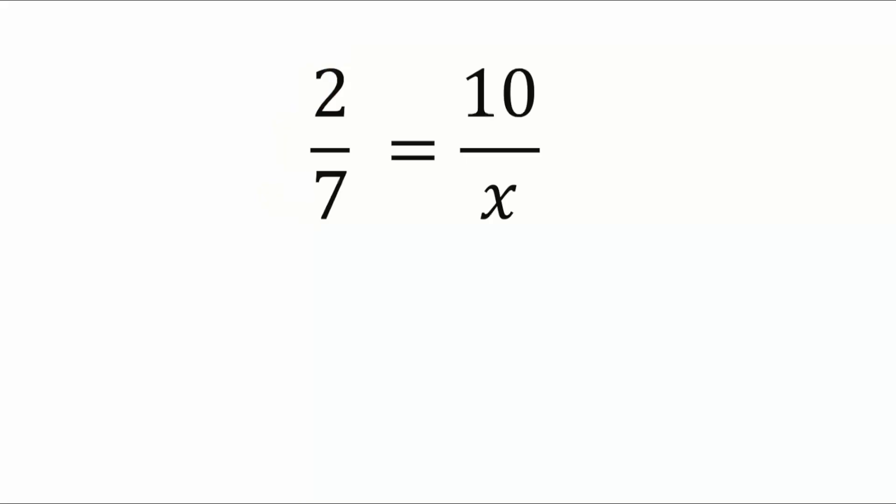We could just straight up go cross multiplication and division. We could. 2 times x, 2x, 7 times 10, that's 70.